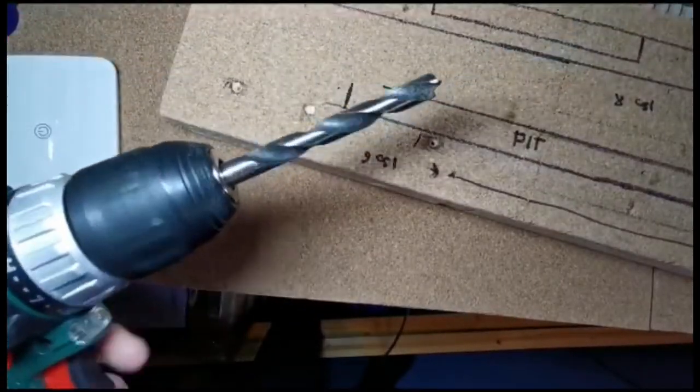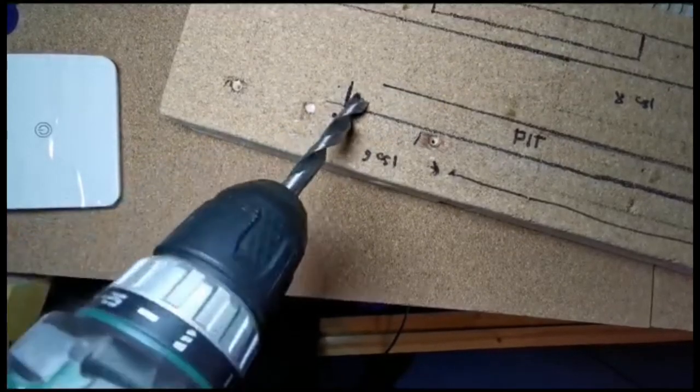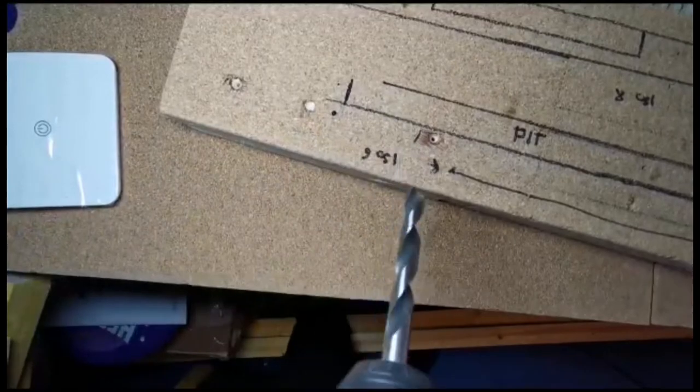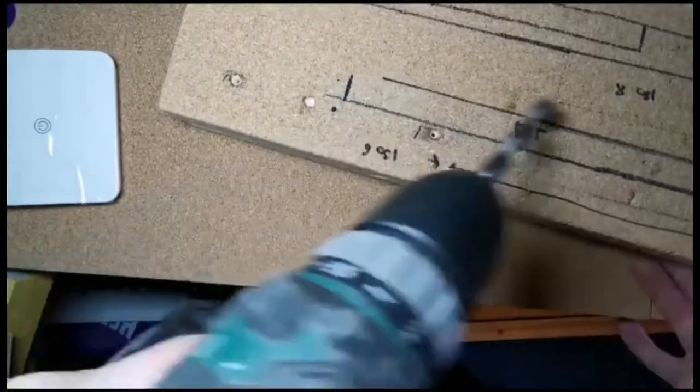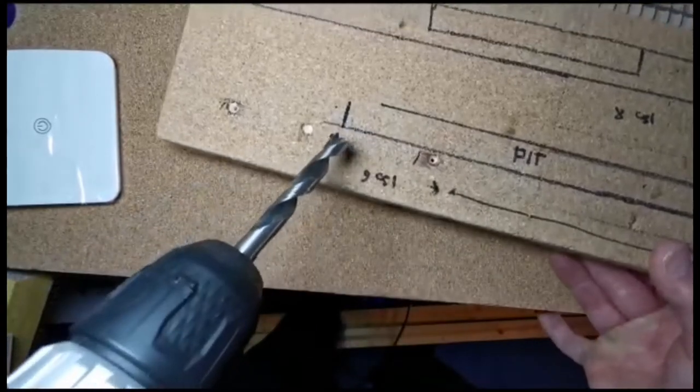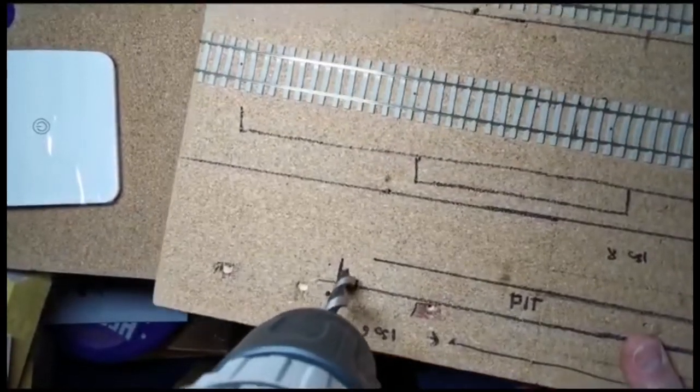So I've got my drill out, and I'm going to drill a couple of holes, one at one end and one at the other end of the pit. It'll allow me to get the jack saw blade in, just to run some nice lines up and down both sides, and we'll get that jack sawed out.